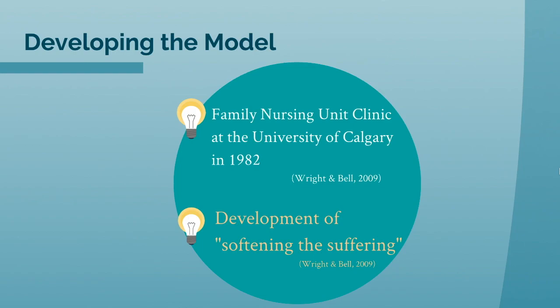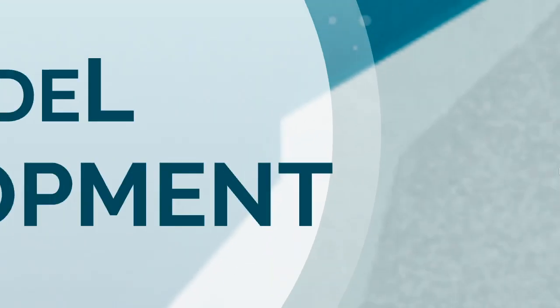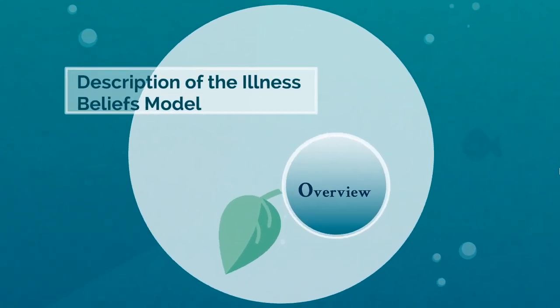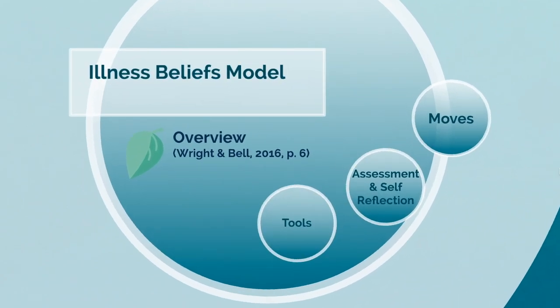Lorraine Wright started the Family Nursing Unit Clinic at the University of Calgary in 1982, and it was the clinic that allowed for the education and clinical experience needed to develop the Illness Belief Theory, as students and practitioners worked with families experiencing illness and suffering in order to gain understanding that would ultimately lead to techniques to soften the suffering. (Wright and Bell, 2009)